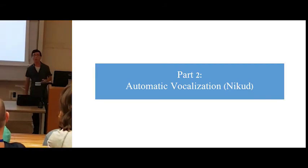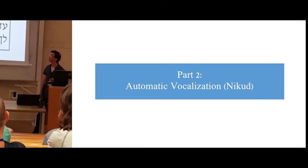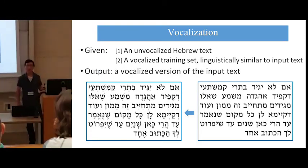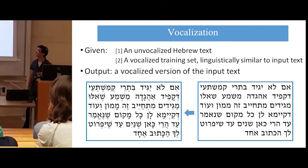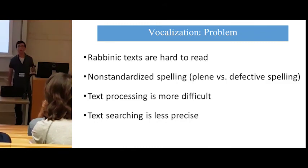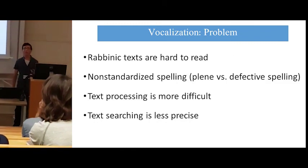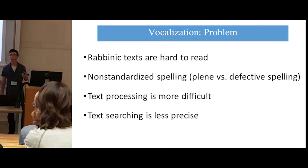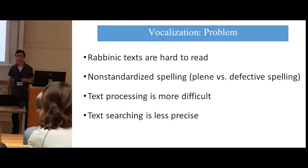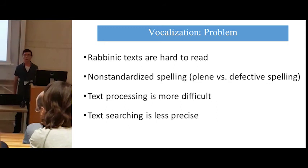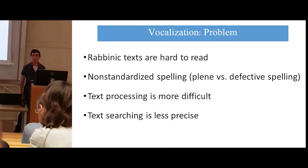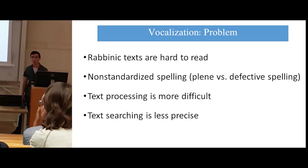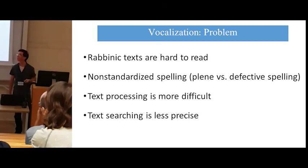Our second project is automatic vocalization. Our objective is to take a rabbinic text and automatically add vocalization to it. In contrast to modern-day newspapers, rabbinic texts are very hard to read without vocalization — many words are ambiguous. Also, as we mentioned earlier, in the medieval and early modern times there was no standardized spelling. So these two problems make text processing more difficult and text searching less precise.